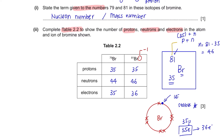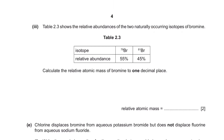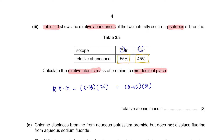Part 3: Calculate the relative atomic mass of bromine to one decimal place. The top number represents the atomic mass of the elements. When we calculate the mass according to the percentage of relative abundance, we get a value of 79.9. The question asks you to leave the answer to one decimal place, so the answer is 79.9.